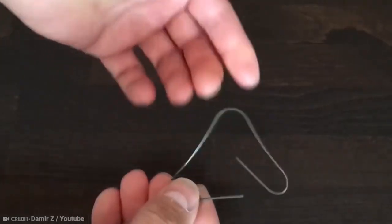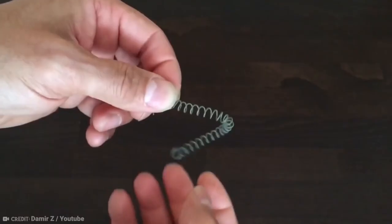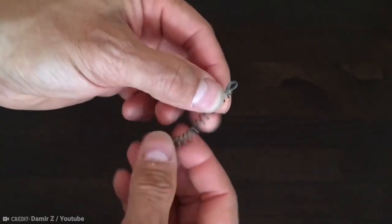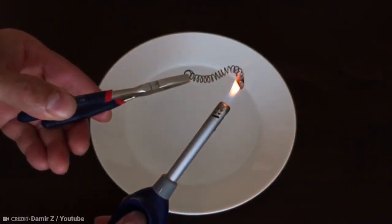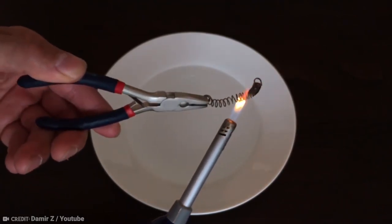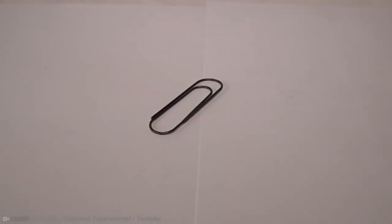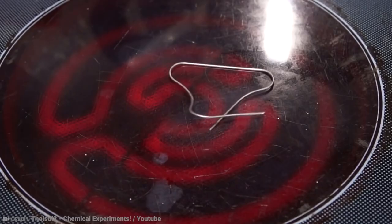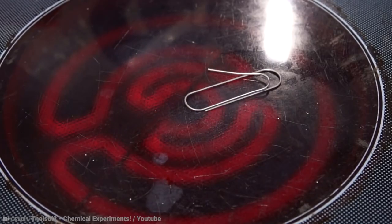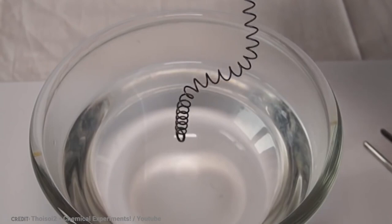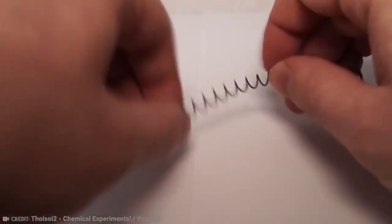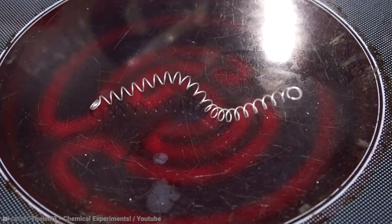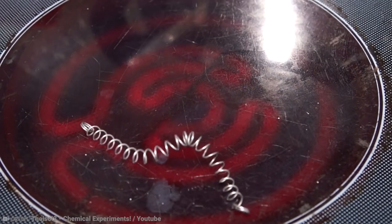The amazing thing with these is that they exhibit what's called the shape memory effect. The molecules that they're made from remember the original shape, so when they've been bent or distorted, all you need to do is heat them up, and they'll return to how they were before. The most unusual ones though, have a two-way shape memory effect, which means that cooling it will make it take on one form, whereas heating it will arrange it into another predetermined shape.